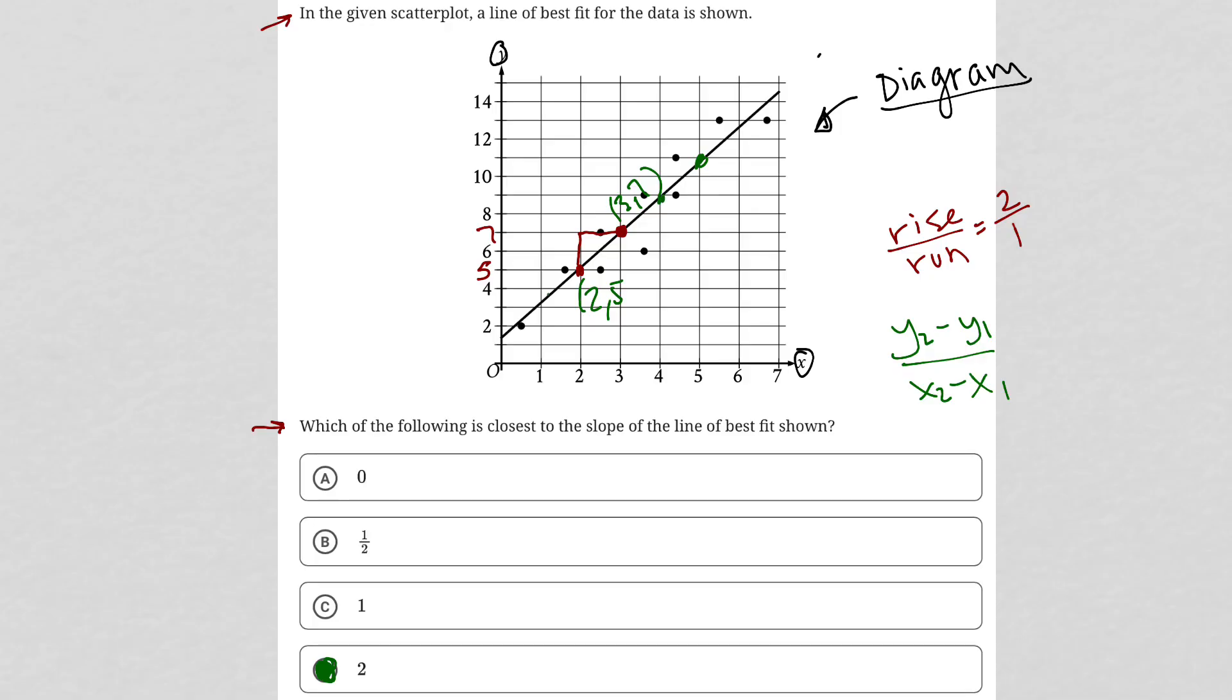It's hard to use points where you're not certain where they are, so use the grid line intersections to your benefit. The question says 'closest,' so be okay with estimating and rounding those values. These points are probably not exactly (3,7) and (2,5), but they're good enough to get a sense of what the answer will be.